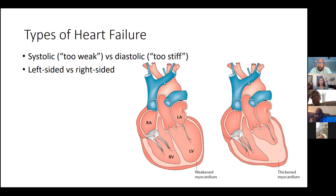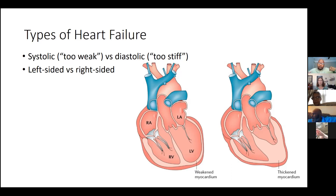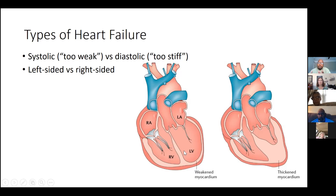In diastolic heart failure, the heart squeeze is fine, but it can't allow much new blood to come in. The analogy might be those guys who are so muscular they can barely use their arms — the heart is just too stiff. You can also have isolated failure on one side of the heart versus the other — isolated left-sided heart failure primarily causes the lungs to get flooded with fluid and insufficient blood flow to major organs like the kidneys.